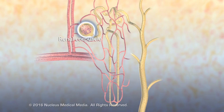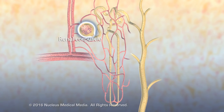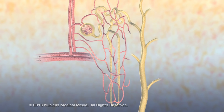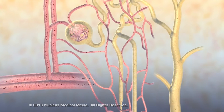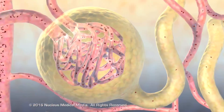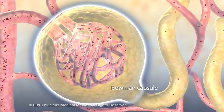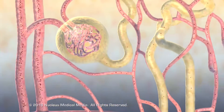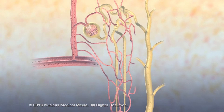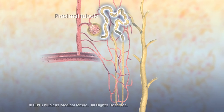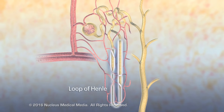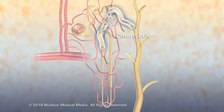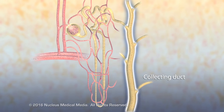Each nephron contains a renal corpuscle and renal tubule. The renal corpuscle includes the Bowman capsule and glomerulus. The renal tubule is composed of the proximal tubule, loop of Henle, distal tubule, and collecting duct.